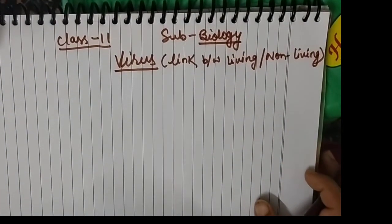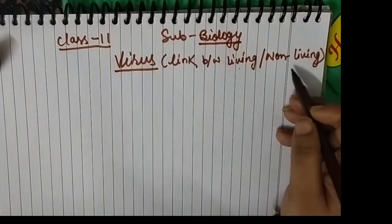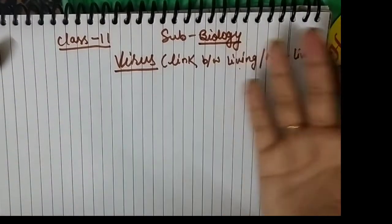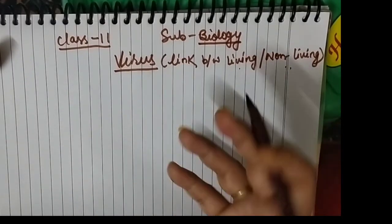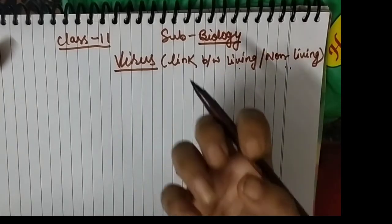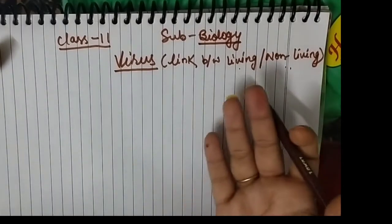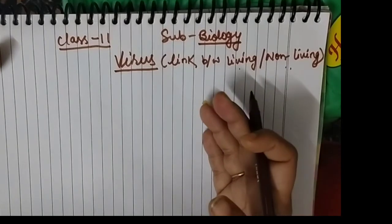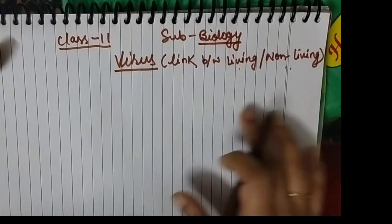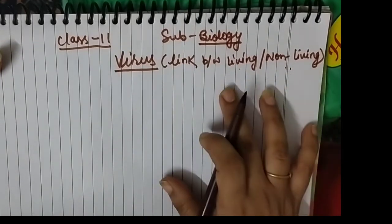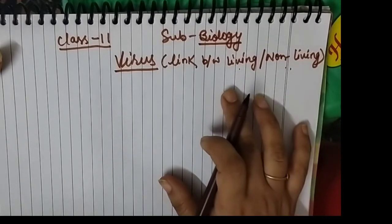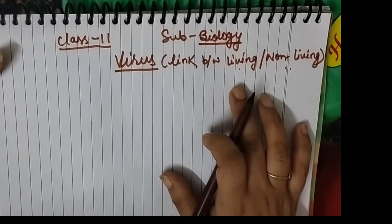Basically, it has some characters of living but also some characters of non-living. When it is present in the outer environment, it is present like a crystal, and many scientists preserve them as crystals in bottles. A living thing cannot be preserved in the form of a crystal in a closed bottle. So it acts like a non-living when present in the environment, but when it gets into any living body, it transfers and starts to take over the cellular machinery of that living organism.